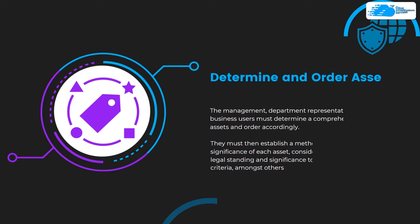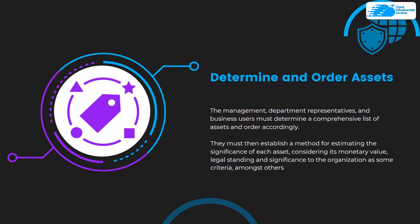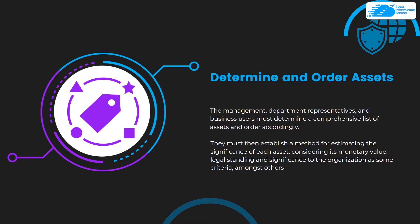At number one we have determining and ordering our assets. Assets are servers, client contact information, confidential partner documents, trade secrets, and so much other valuable data. Management, department representatives and business users must determine a comprehensive list of assets and order them accordingly. They must then establish a method for estimating the significance of each asset, considering its monetary value, legal standing, and significance to the organization, among other criteria.